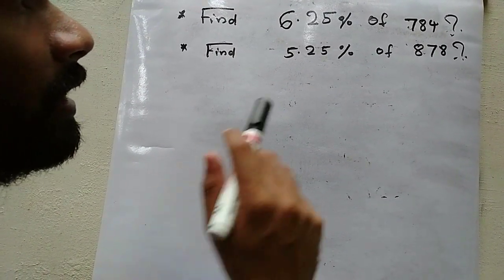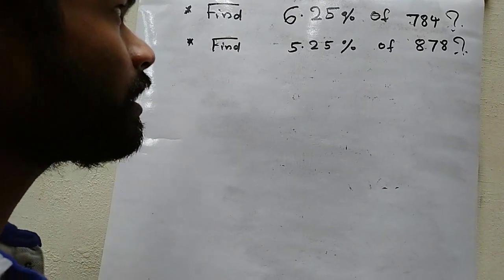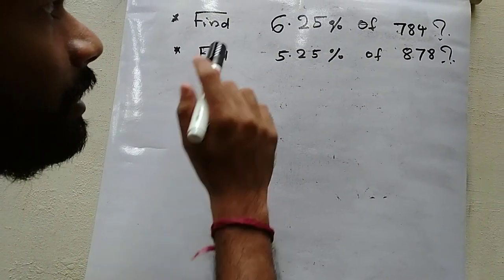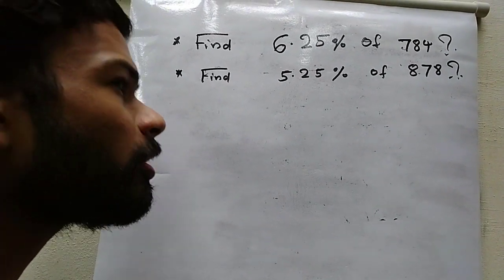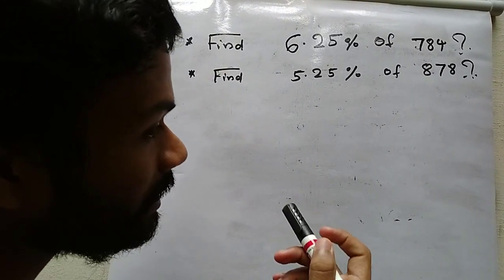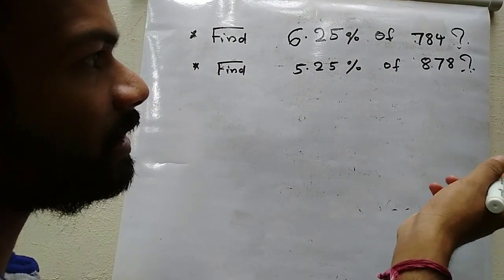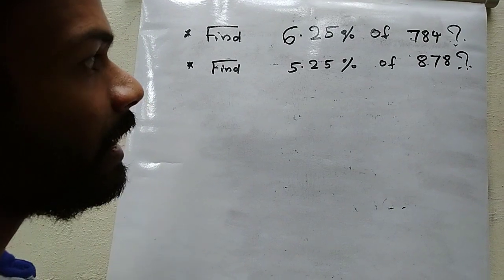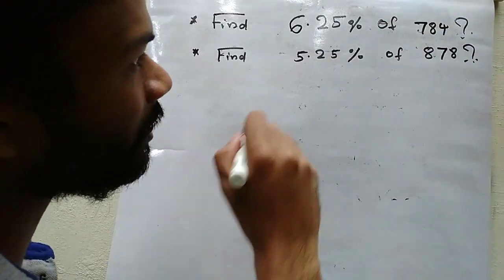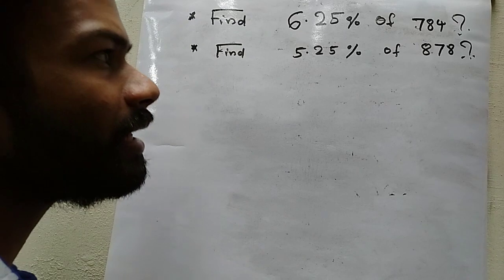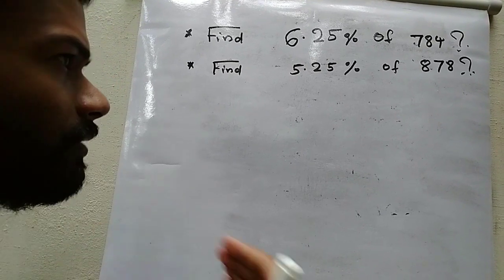The next question is: find 5.25 percentage of 878. Here is a hint: just like what I did previously, you need to find 6.25 percentage of 878, and note that 5.25 percentage is 6.25 percentage minus 1 percentage. So find 6.25 percentage of 878 and subtract 1 percentage of 878 from it. I think you understood the method — it's very easy and very clear. Please try the questions at home.